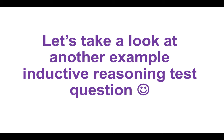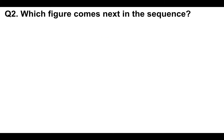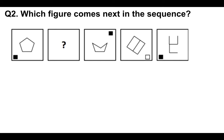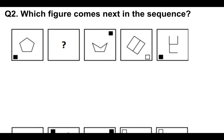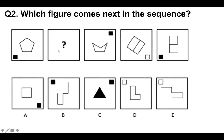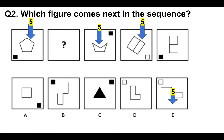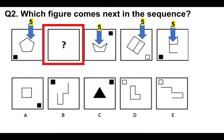Let's take a look at another example inductive reasoning test question — which figure comes next in the sequence? We have to decide which one fits there in that sequence. So let's use our same methodology. You'll notice that shape has got five sides — one, two, three, four, five. That has got five sides, and that one also. So we are looking for a five-sided shape.